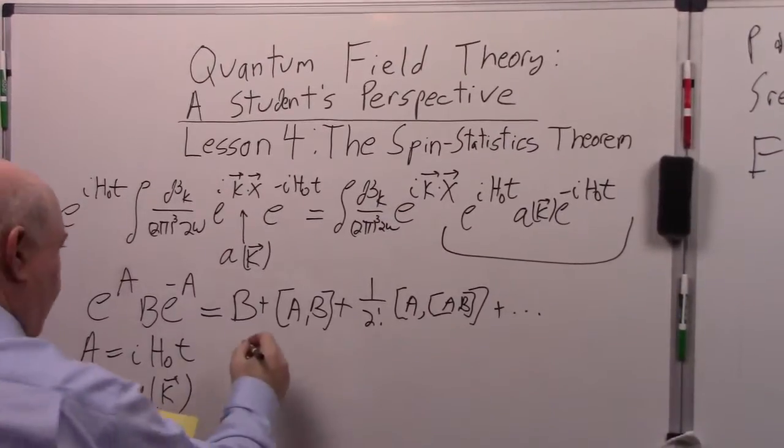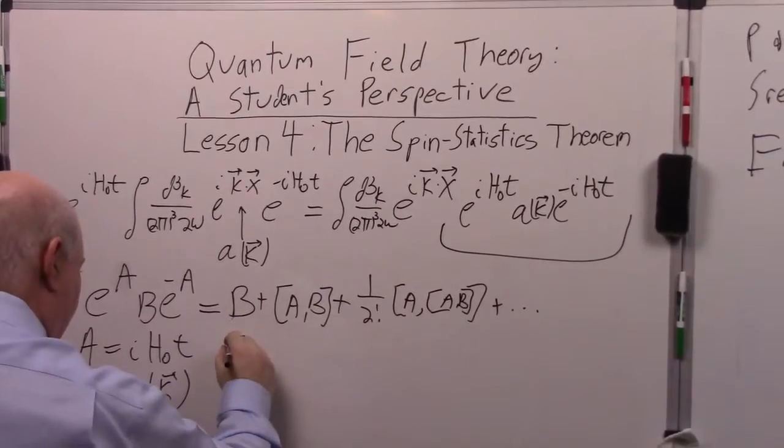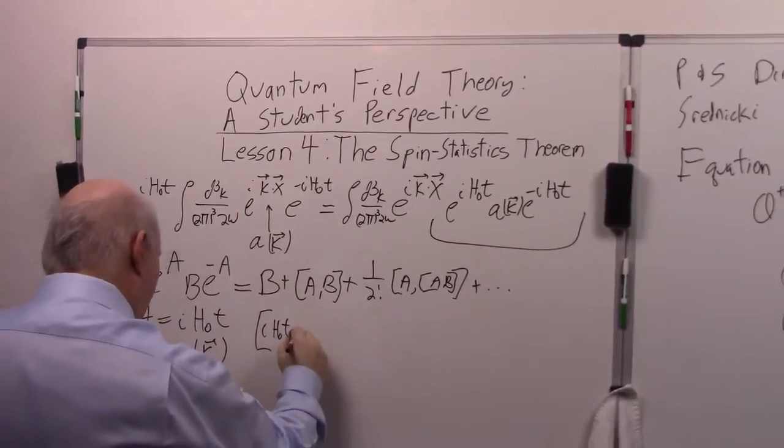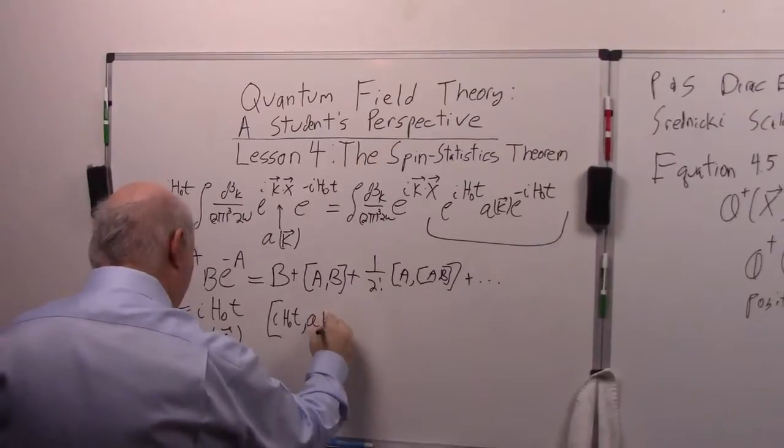So let's do the first one. Then this one over here we need the commutator of IH∂T comma A of K.